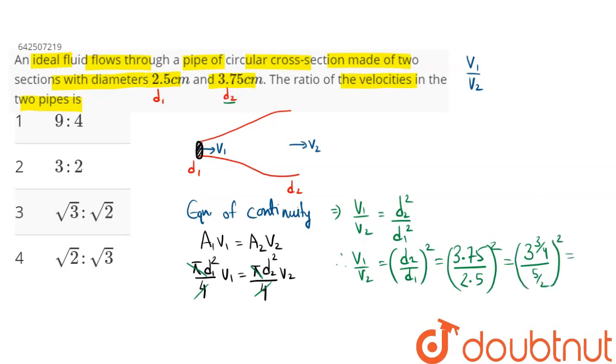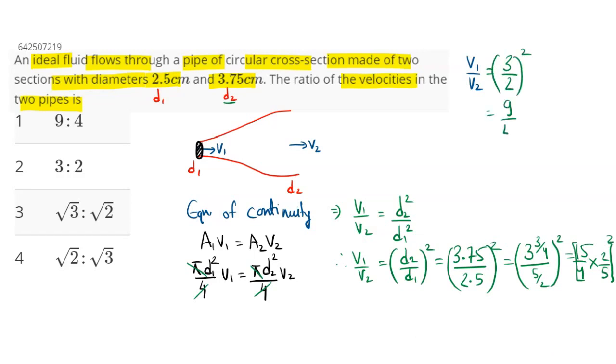So this becomes 15 by 4 and in the denominator this becomes 5 by 2, this is whole square. Hence our answer V1 by V2 comes to be - 5 cancels by 15 - 3 divided by 2 whole square, hence our answer is 9 by 4.